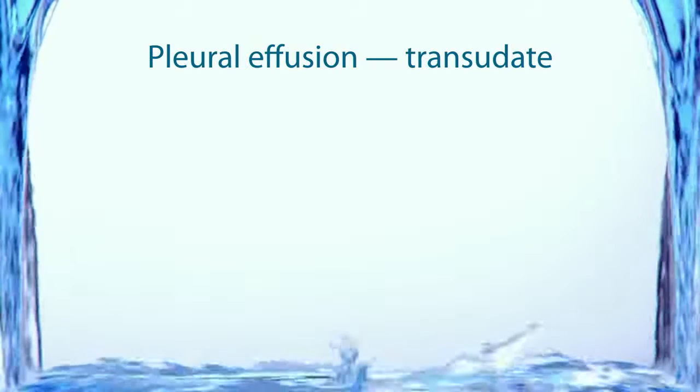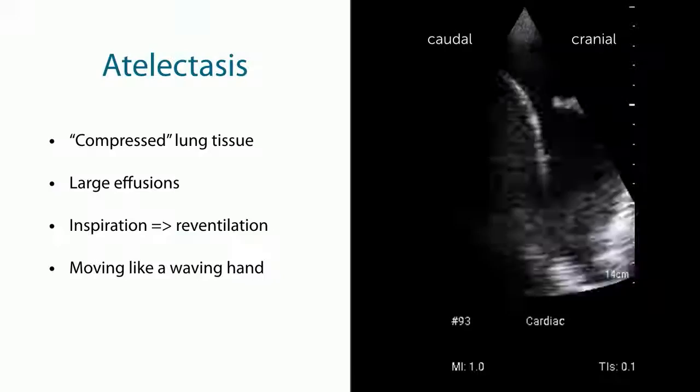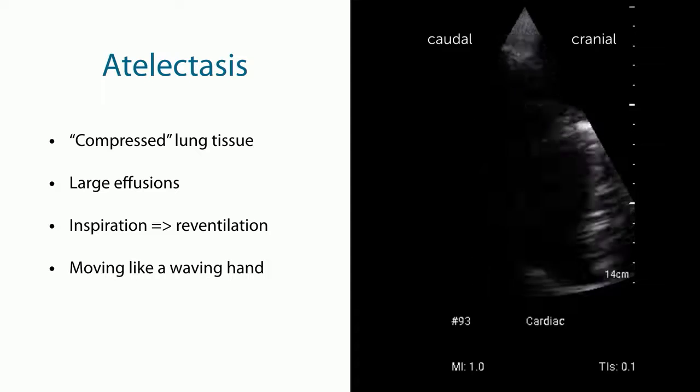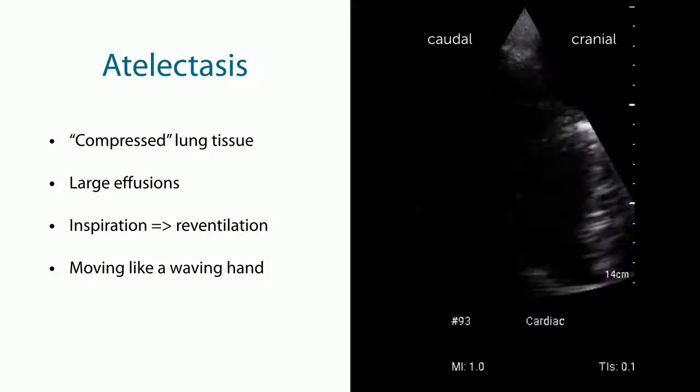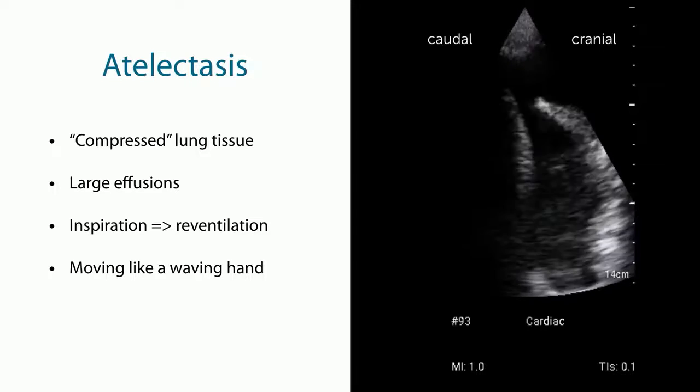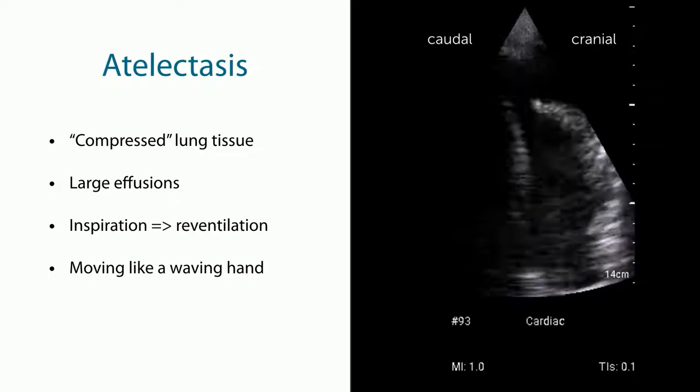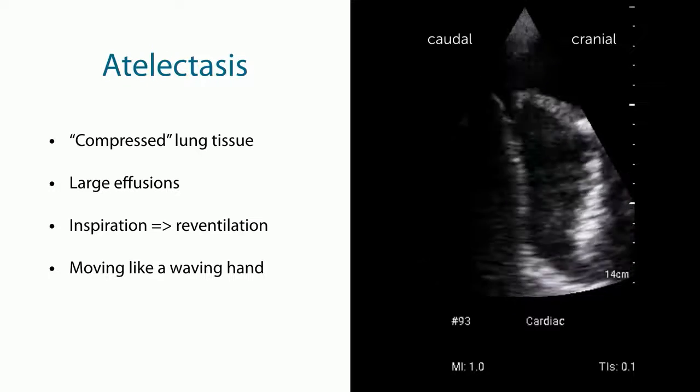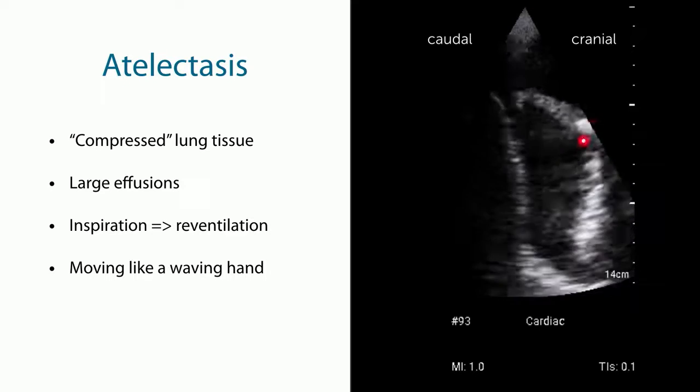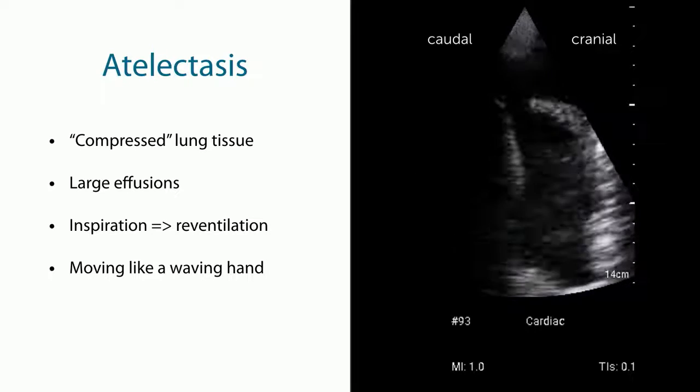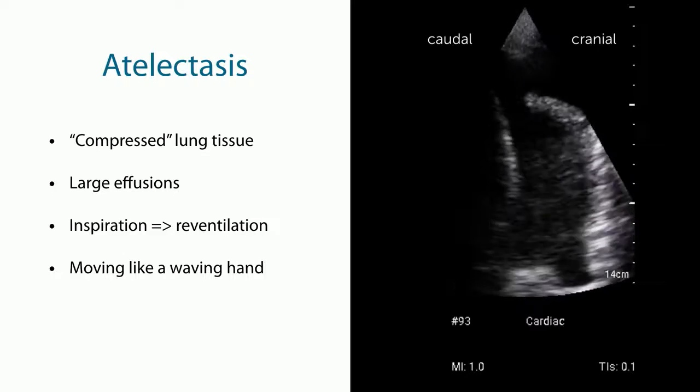But there is a finding which is practically always associated with a pleural effusion and that is atelectasis. Atelectasis is nothing else than just compressed lung tissue. It is normally present in really large effusions. It is re-aerated when the patient inhales as you can see in this loop as well. So you see that this area gets a little bit broader and it moves like a waving hand. So that's very typical for atelectasis.